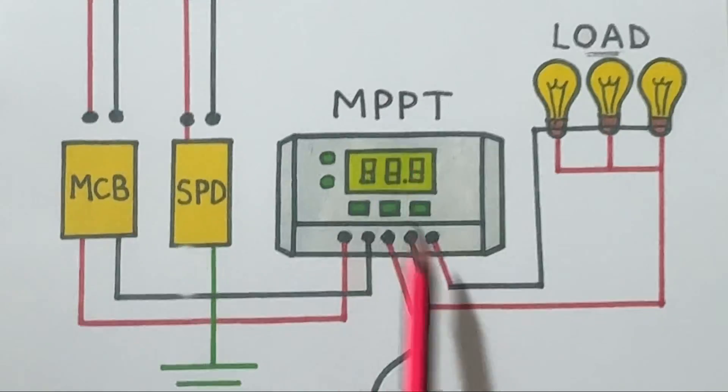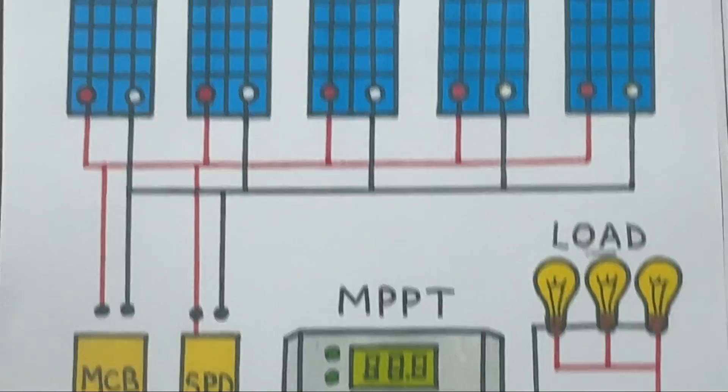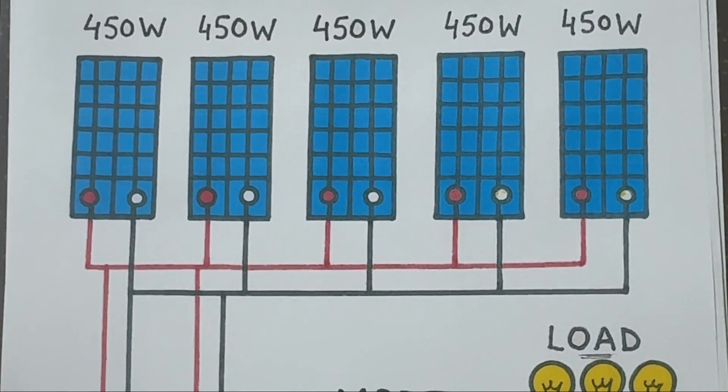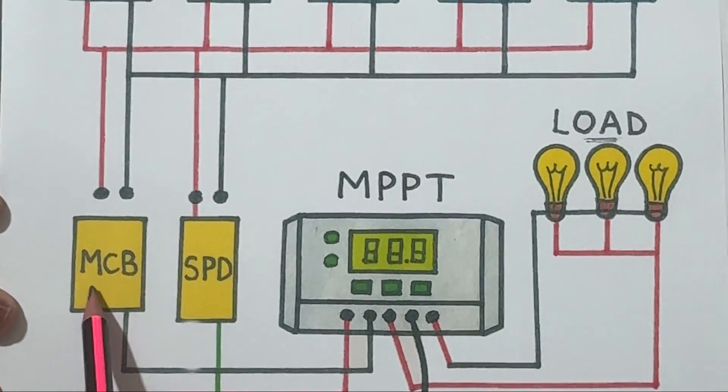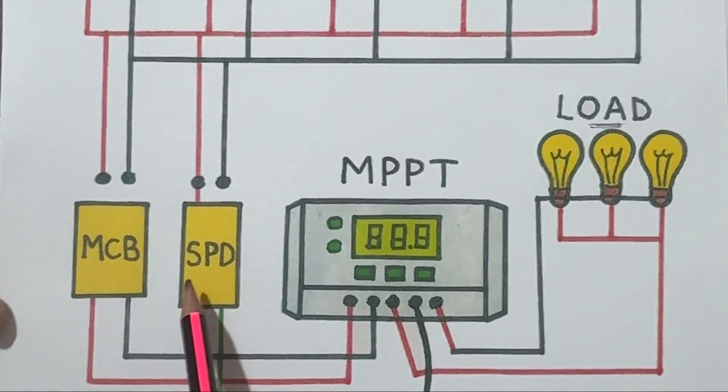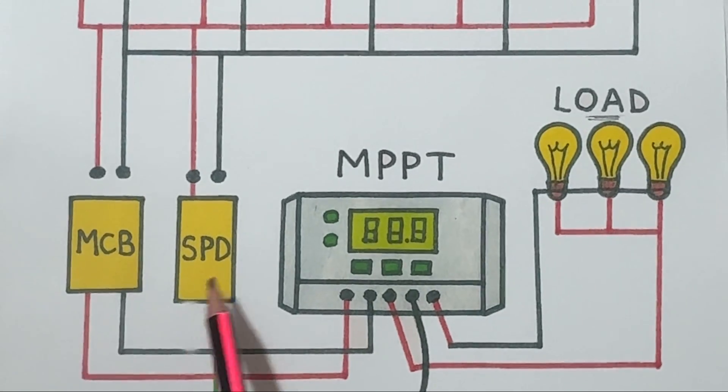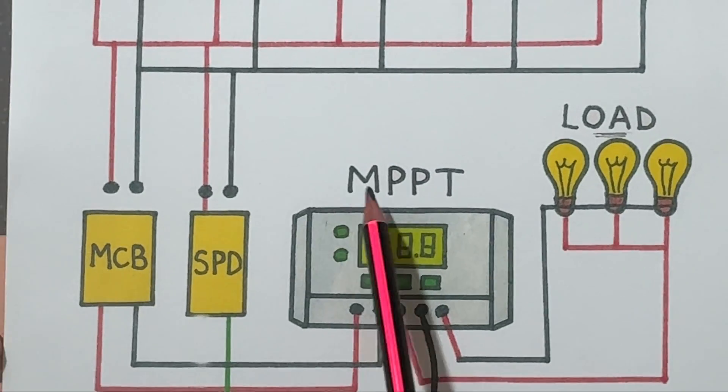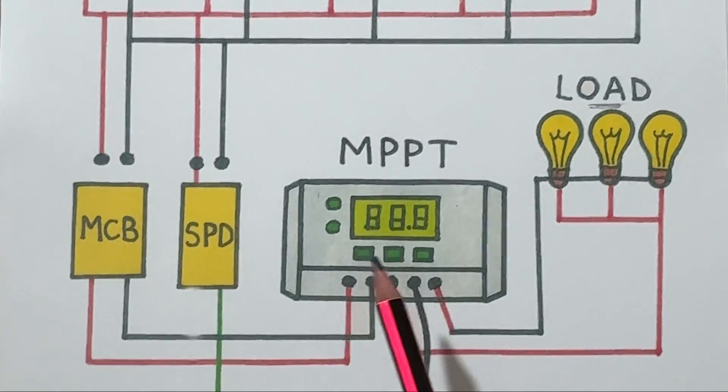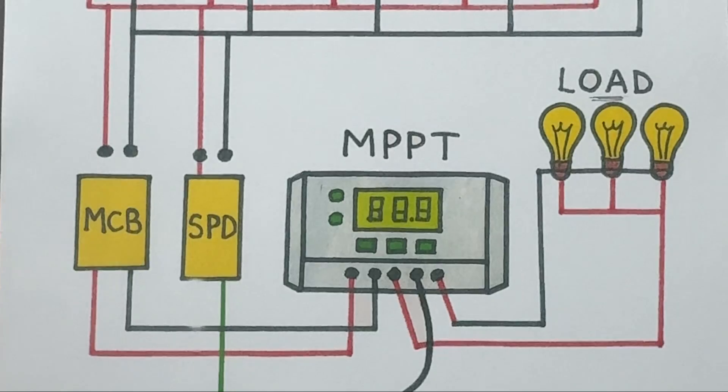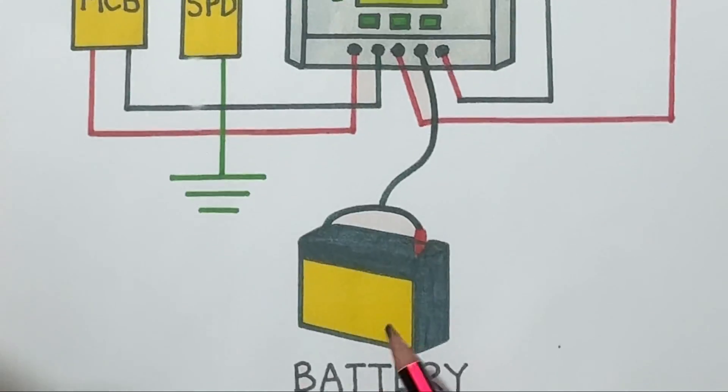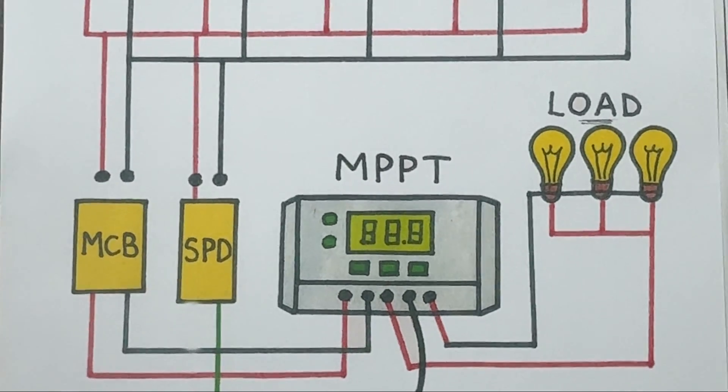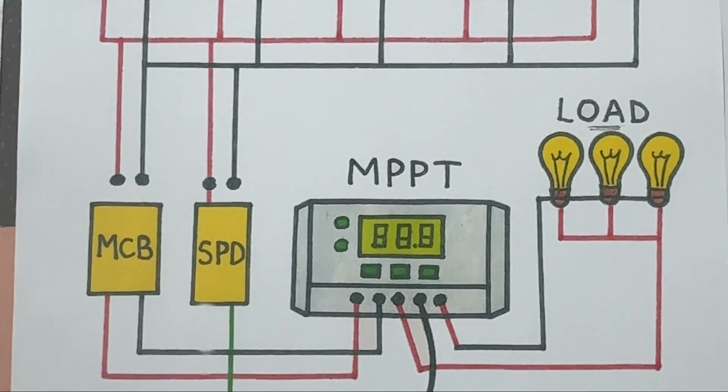Let's quickly summarize the flow: solar panels generate DC electricity. It passes through the MCB for protection and SPD for surge safety. Then it enters the MPPT charge controller, which optimizes the power. The controller charges the battery and powers the loads at the same time. The battery stores energy for use when sunlight isn't available.